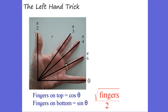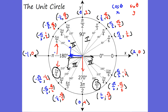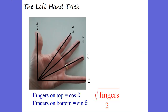If you know the first quadrant, you can know the rest. There is this thing called the left-hand trick. God has given you a left hand, and on this left hand you can see zero degrees, pi over two, pi over four, pi over six, pi over three. The fingers on top represent cosine, the fingers on the bottom represent sine, and you always take the square root of the number of fingers over two.